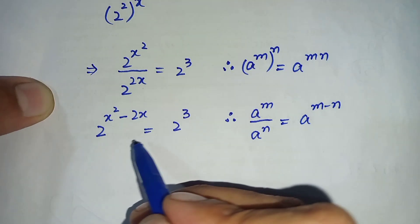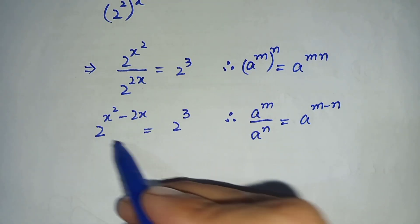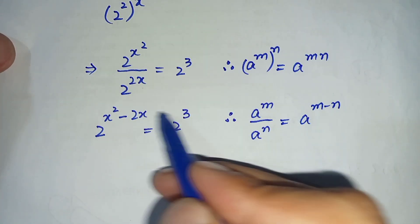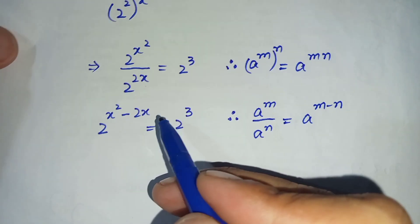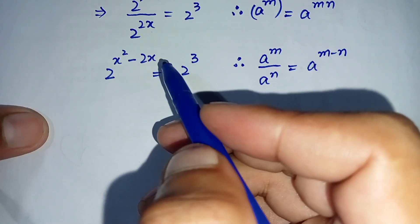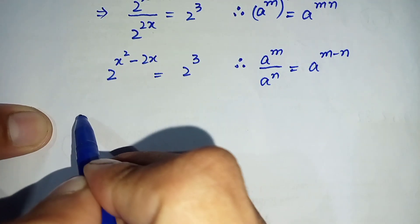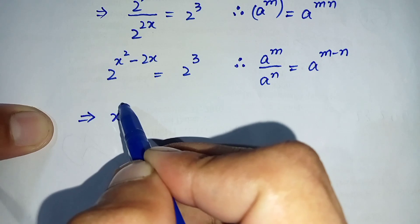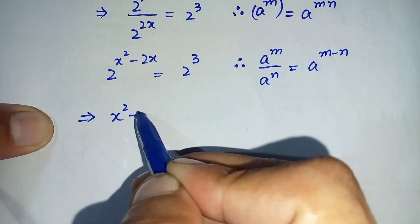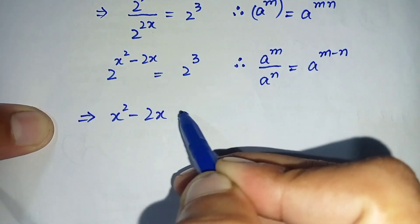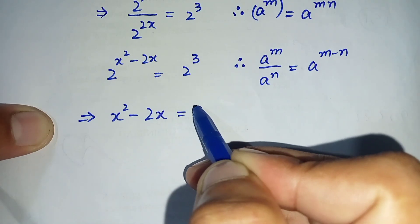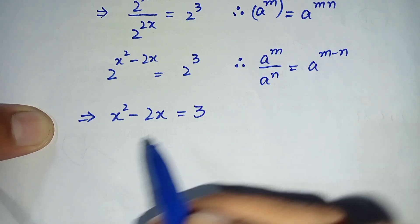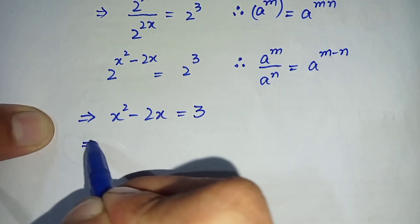Now, look at both sides of this equation — the bases are the same. So when the bases are same we will compare the powers with each other. This implies the powers become equal: x squared minus 2x is equal to 3.